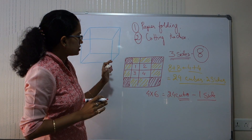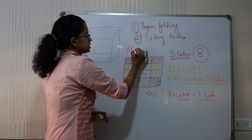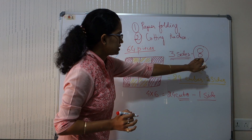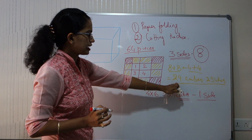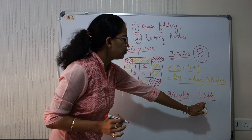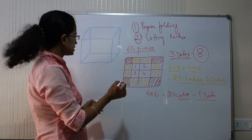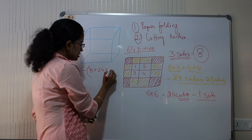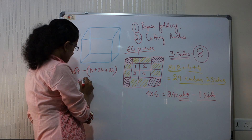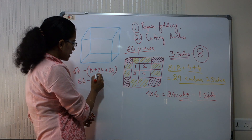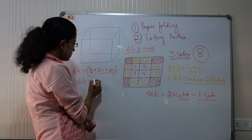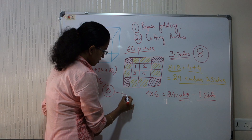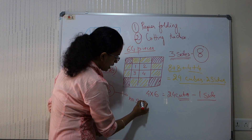Since we are cutting the whole cube into 64 pieces, we have 8 that have 3 sides painted, 24 that have 2 sides painted, and 24 that have 1 side painted. So there is a simple equation: 64 minus (8 plus 24 plus 24). That's 64 minus 56, which equals 8. So there would be 8 cubes that will have no side painted.